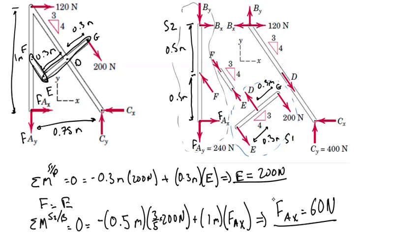that it is 60 newtons in the direction drawn. Now we only have one more unknown, which is Fcx. Since we have already determined Fcy, instead of choosing a new system to analyze we can go back to our original free body diagram. Let's call this S0 and take sum of the forces in the X to solve for Fcx.